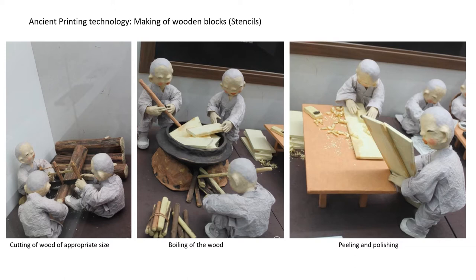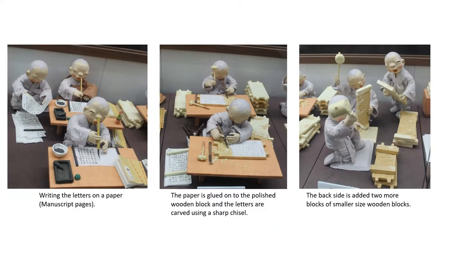The method lasted in Japan until modern printing machines were invented. The methods used were wooden block stencils. First the wood is cut in appropriate size and the blocks are boiled and steamed. The surface of the wooden block is then scraped to obtain a smoother surface. The manuscript letters are then carefully written on paper and glued onto the wooden block.